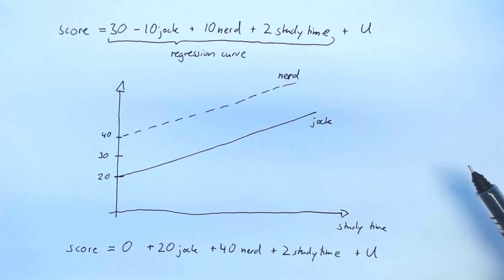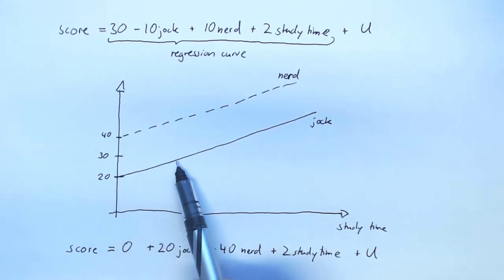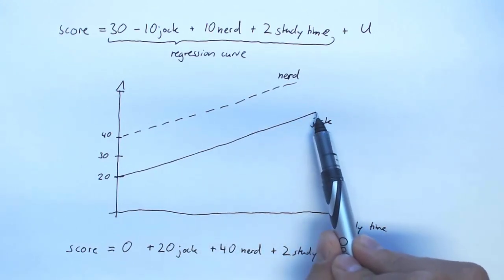Now suppose you're a jock again. You get 0, you start from down here. Then you get 20 times 1, so 20 because you're a jock. Then you don't get any of those 40 points because nerd is 0 for you. But then you get 2 times for every hour that you study. So you exactly get the same curve as you got before.